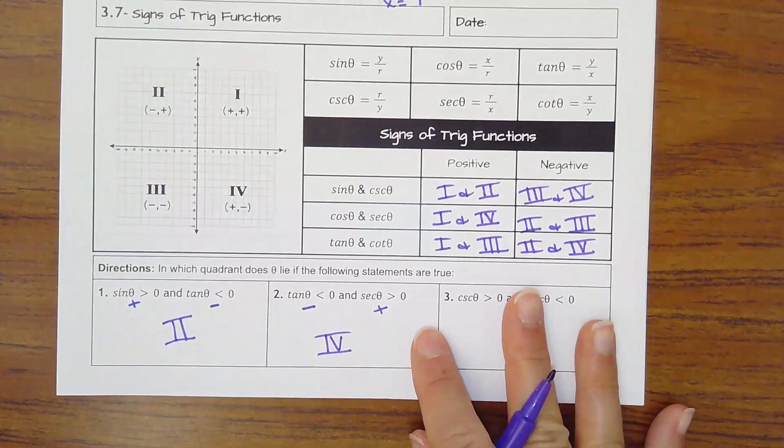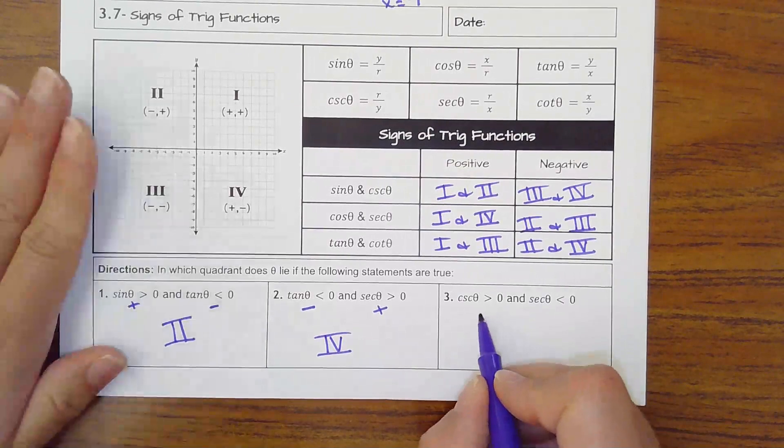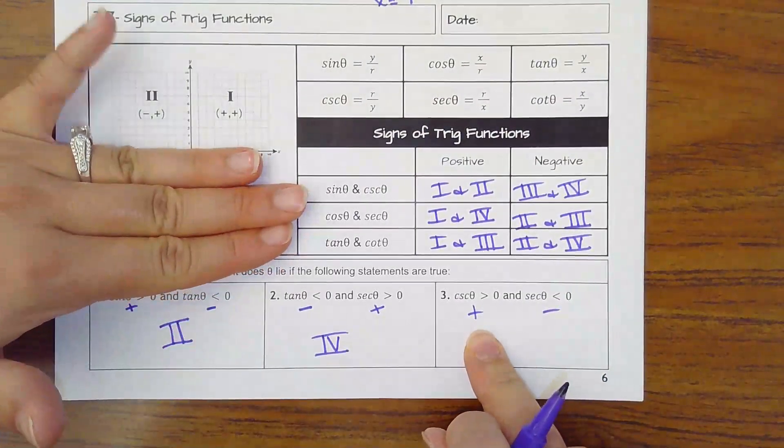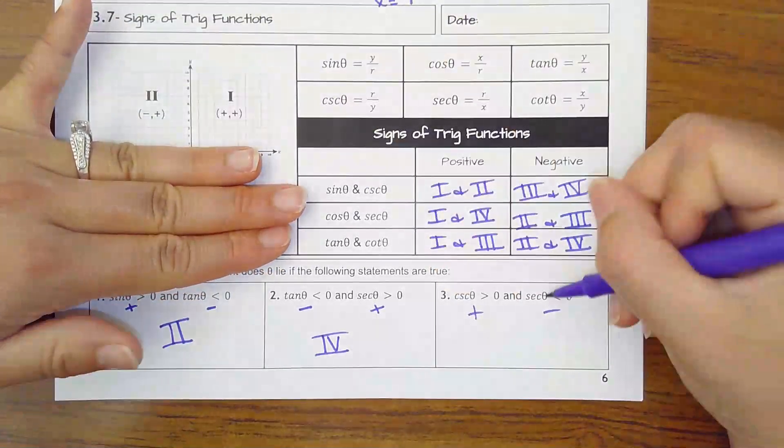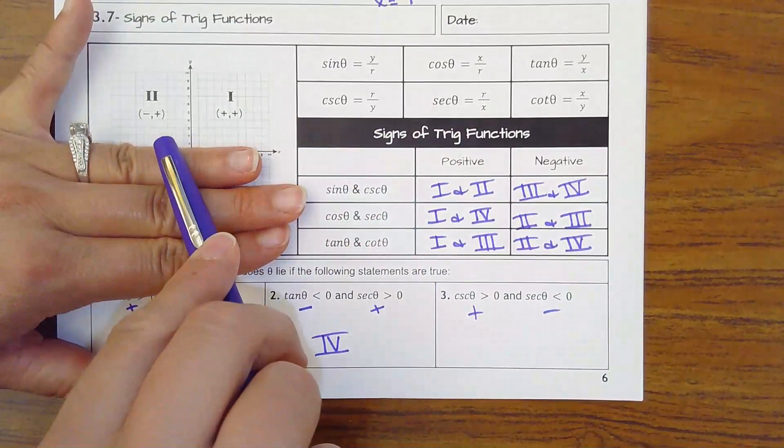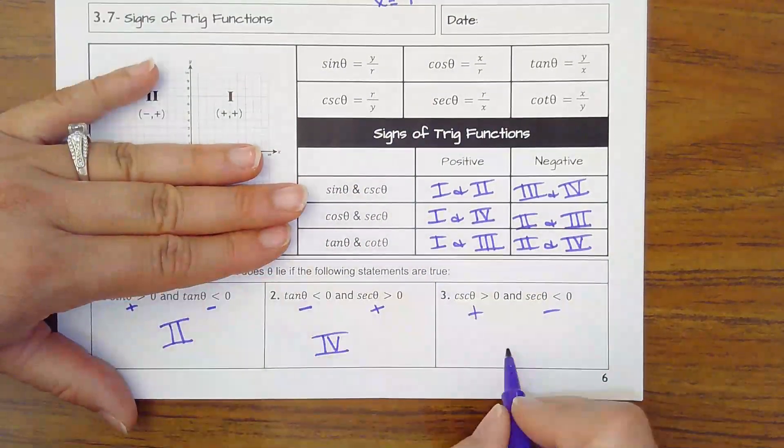And then last one. Cosecant needs to be positive, secant needs to be negative. Cosecant goes with sine. Sine is positive when y's are positive. So quadrant 1 or 2. Where is secant negative? Secant goes with cosine, which is x's. X's are negative when you go to the left. So quadrant 2.